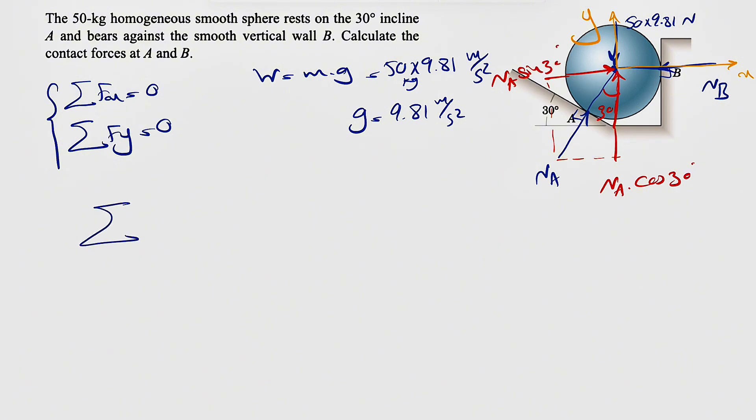Let's do our sum of all forces in X equals zero. We're going to have NA sine of 30 degrees minus NB equals zero, so NB is equal to one half of NA. We know sine of 30 is 0.5 or one half.